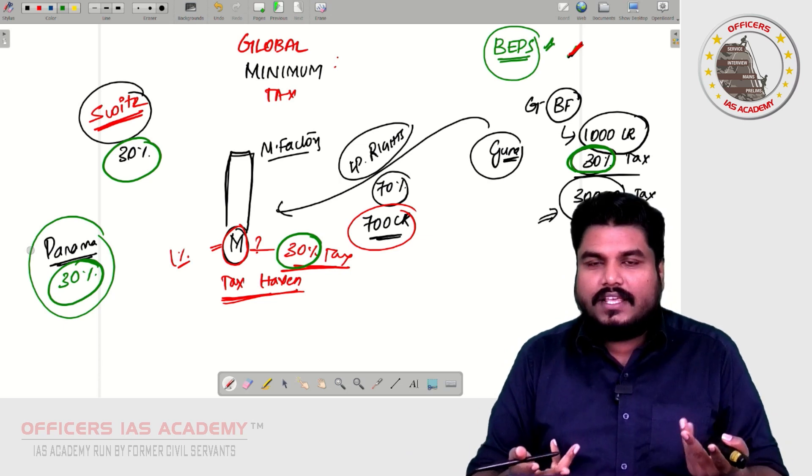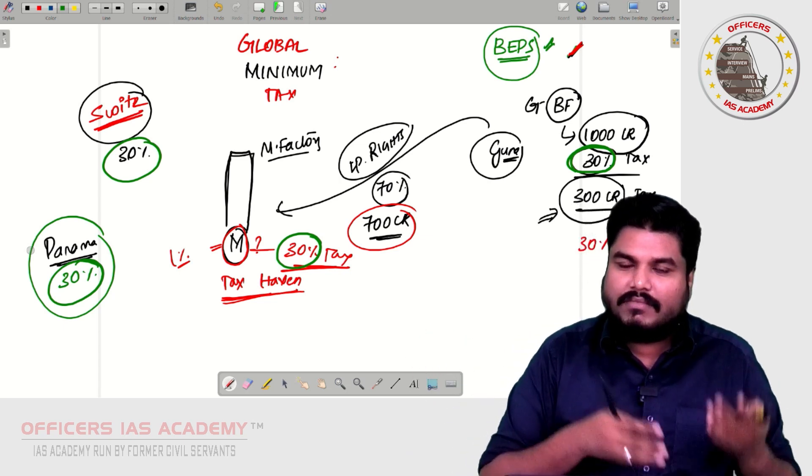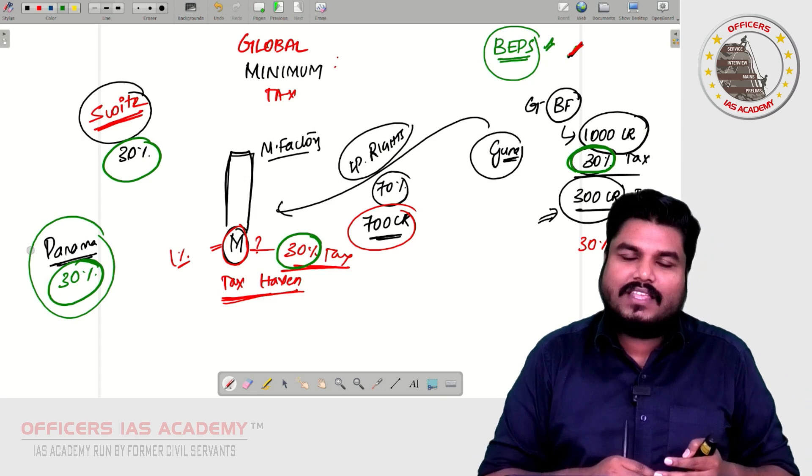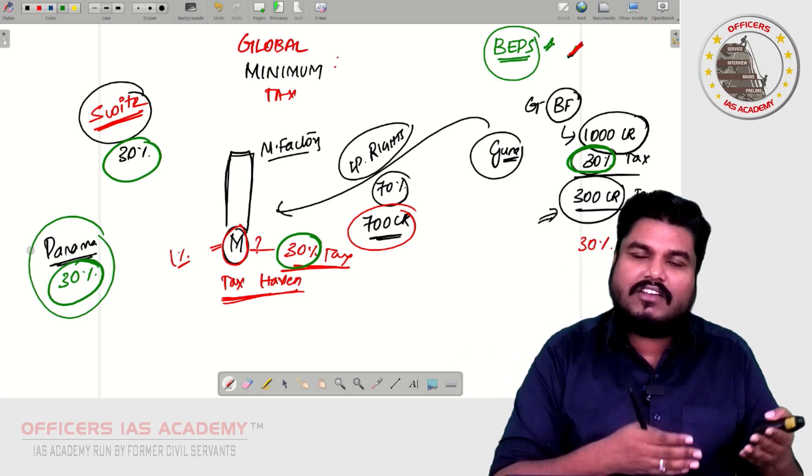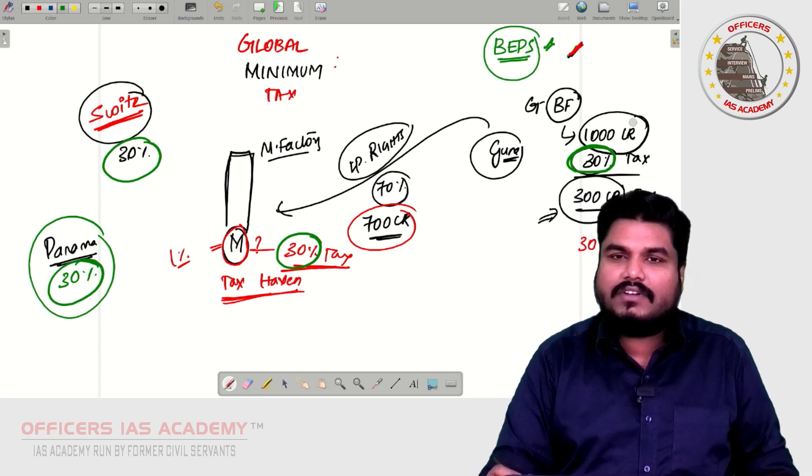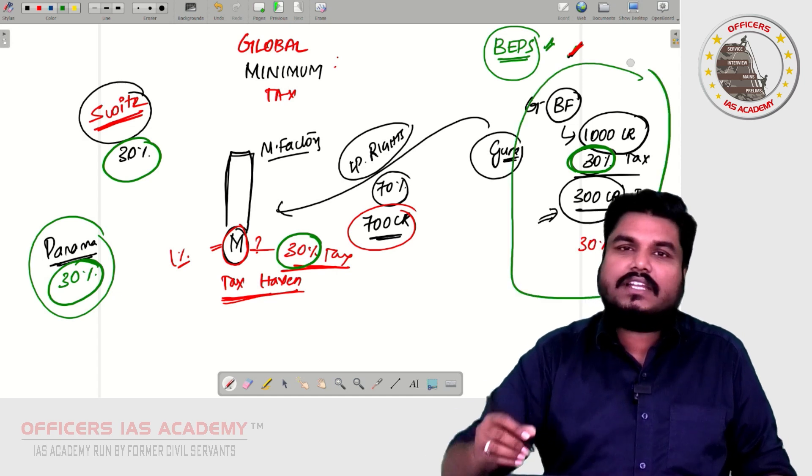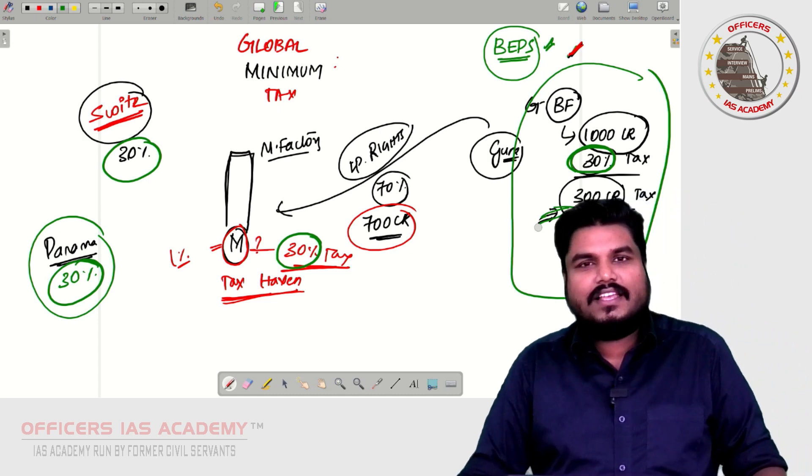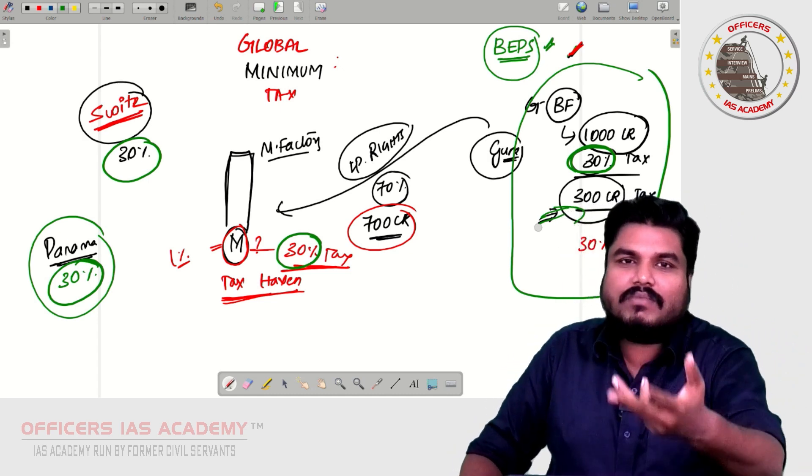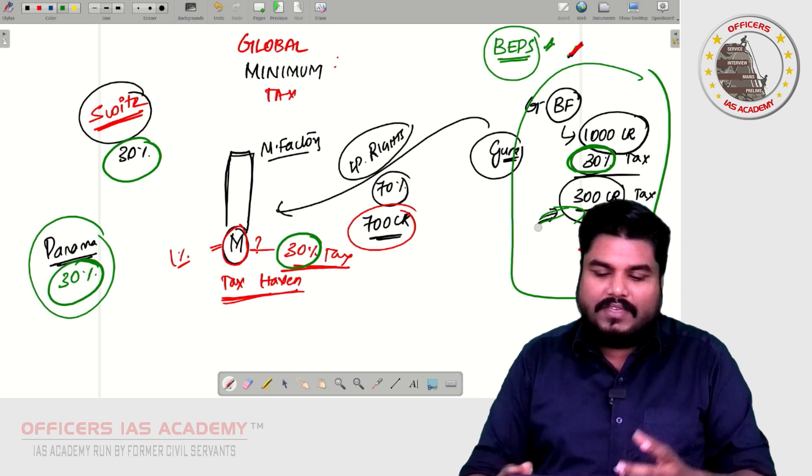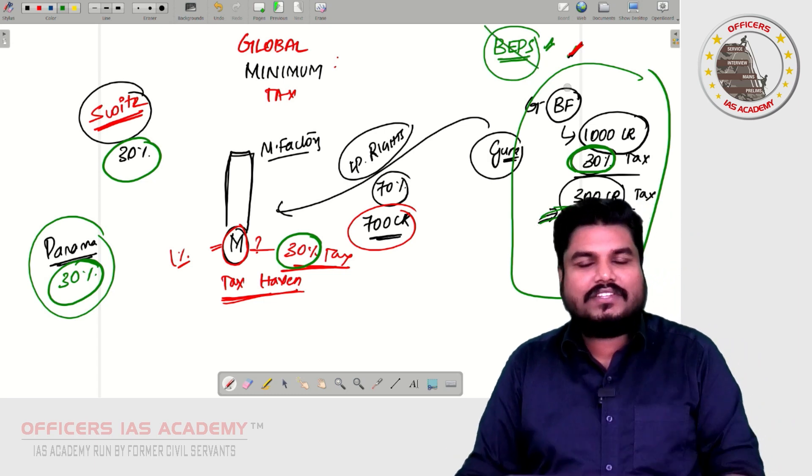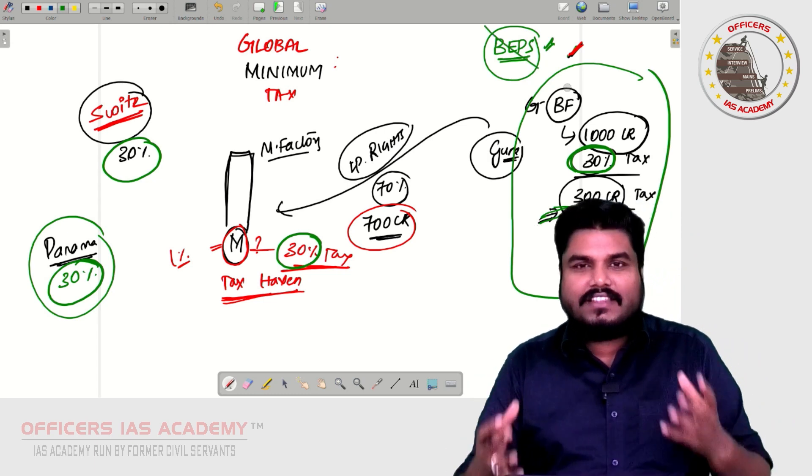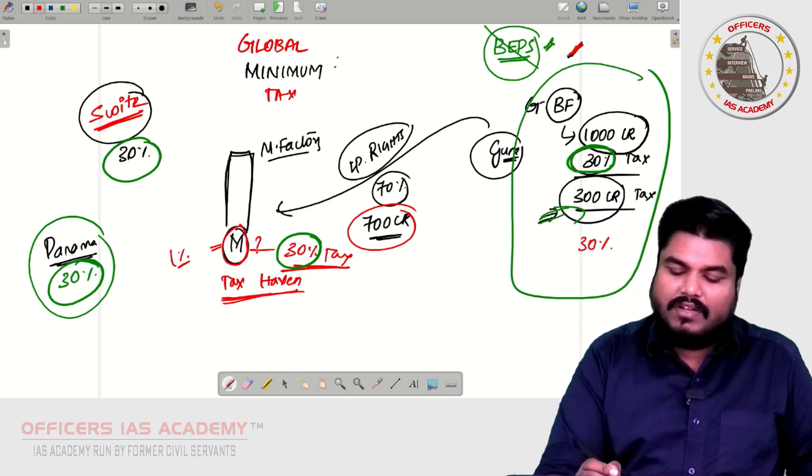What will happen? Guna will choose to stay in India only. He cannot take, there will be no use. Even if he takes to Mauritius, Mauritius government will put 30% tax. Even if Guna takes to Switzerland, Switzerland government will put 30% tax. So what Guna will do? Guna will choose to retain in India only. He is forced to pay the entire tax amount. He cannot involve in Base Erosion Profit Shifting. BEPS is not possible in such situation. So achieving that situation is the objective of this Global Minimum Tax.